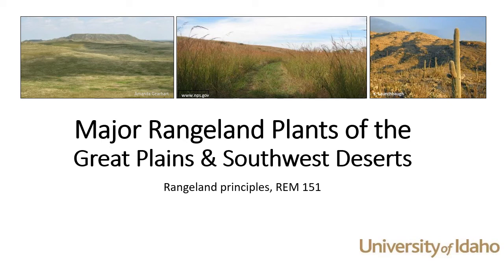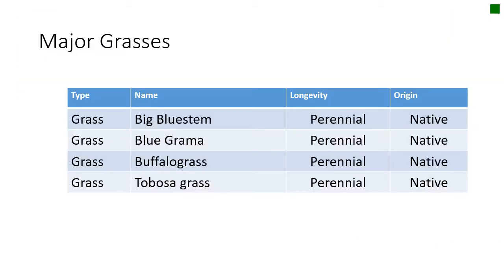Here's an overview of just 10 plants that we talked about in the Great Plains grasslands and the southwestern desert shrublands and grasslands — a quick overview for rangeland principles at the University of Idaho. Now let's go into some plants that we've talked about already, but the ones that you'll need to know in this class.